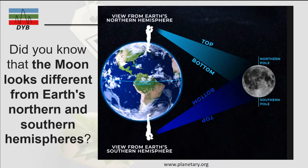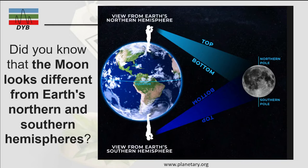Did you know that the moon looks different from the earth's northern and southern hemispheres? If the moon is here and a person is looking from the northern hemisphere, they will be looking at this part of the moon. But a person on the southern hemisphere will be looking at a different region of the moon. That is why the moon appears differently from the northern and southern hemispheres, and also from the equator.